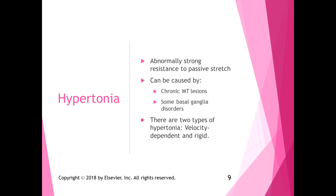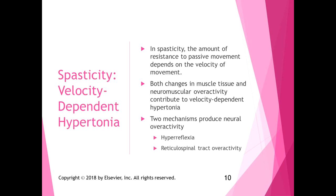Spasticity is velocity-dependent hypertonia. In spasticity, the amount of resistance to passive movement depends on the velocity of the movement — a slower movement may produce little resistance, while a faster movement produces more resistance. Both changes in muscle tissue and neuromuscular overactivity contribute to velocity-dependent hypertonia.